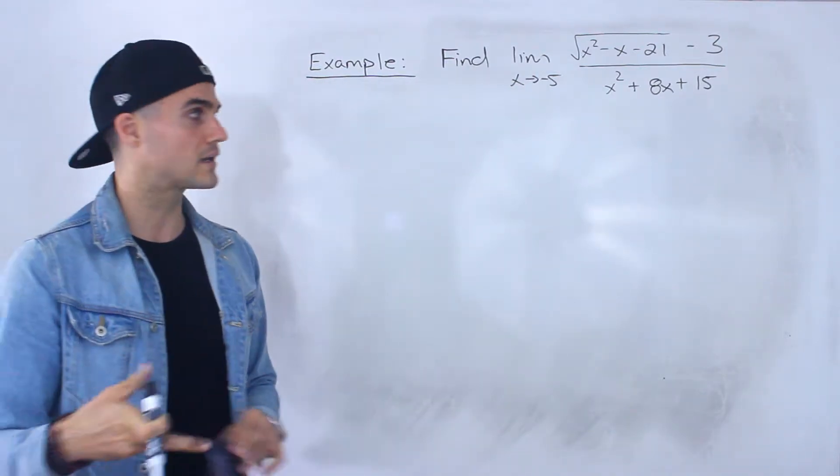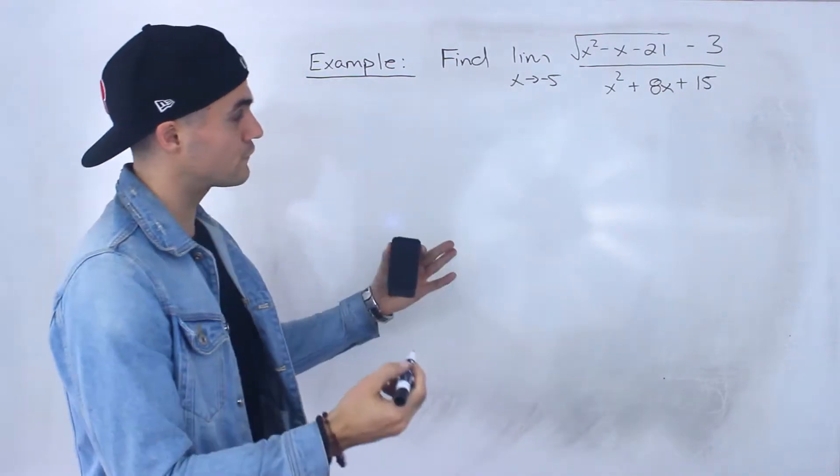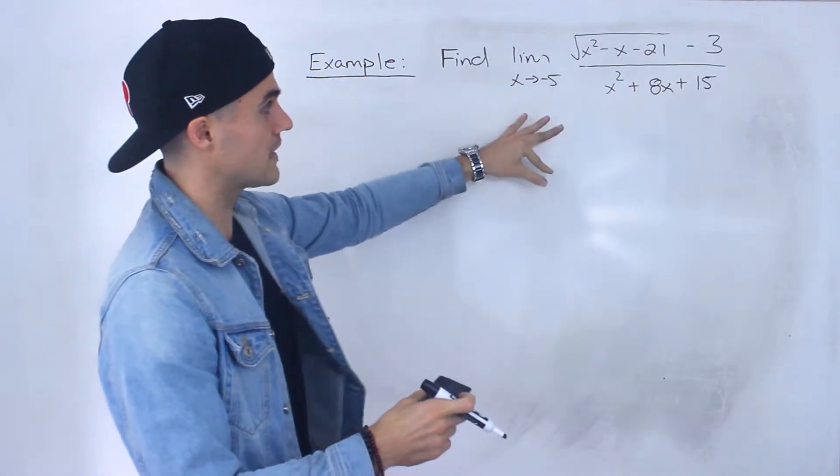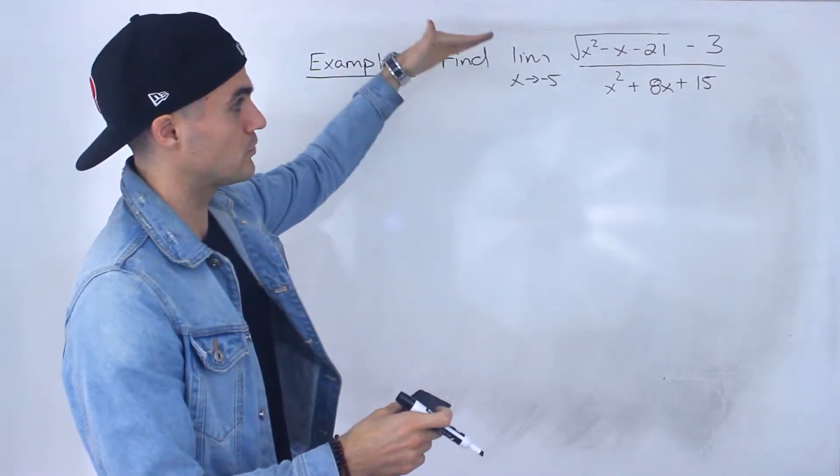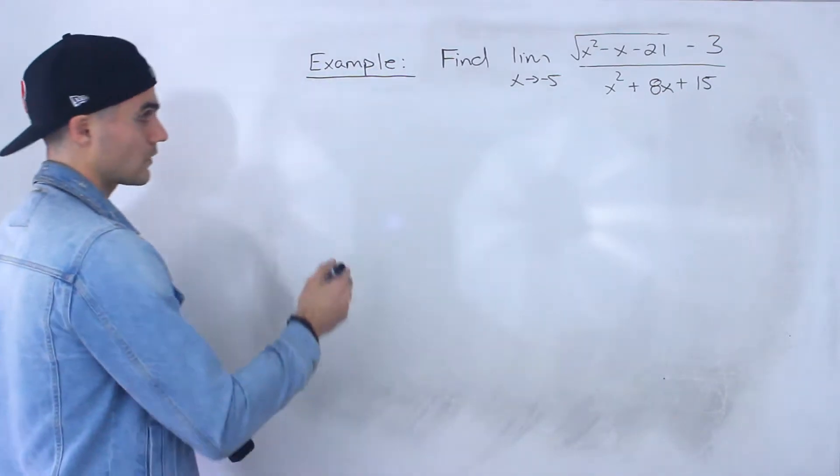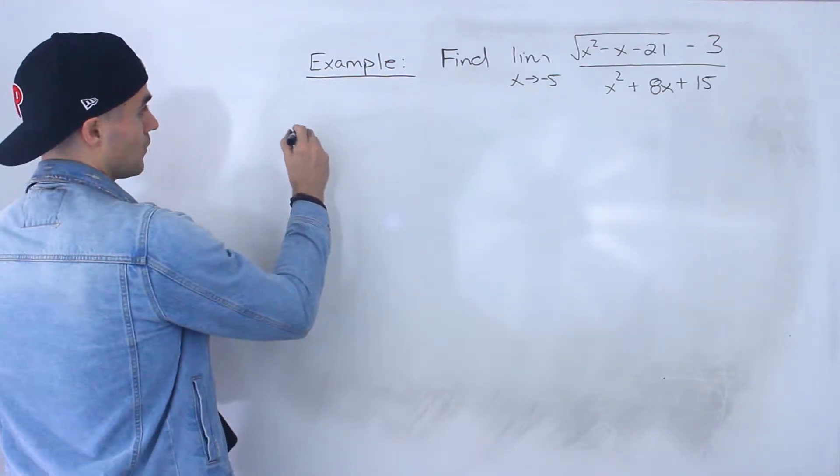We're mixing different strategies in this case. Now first thing to notice is you can't do a direct substitution, because if I plug in negative 5 for all the x values I would end up with 0 over 0. So that's not going to work out unfortunately.